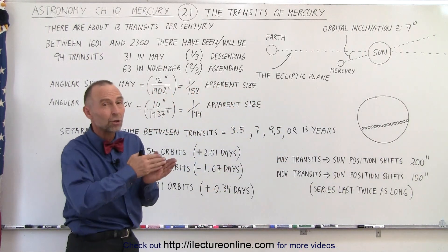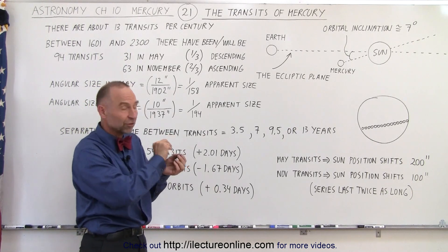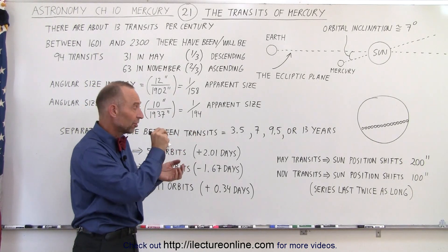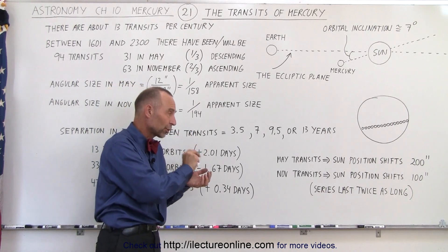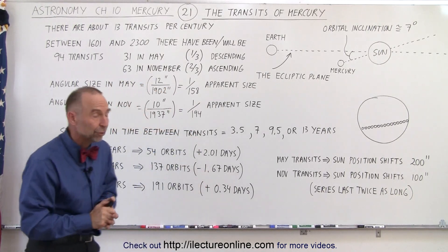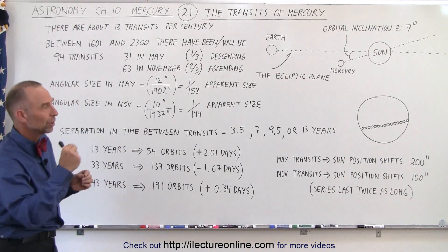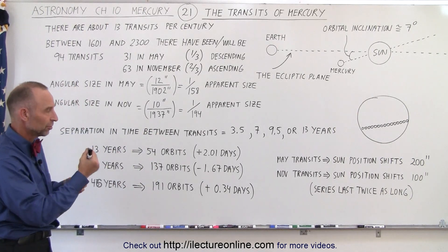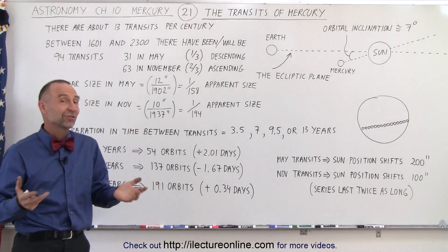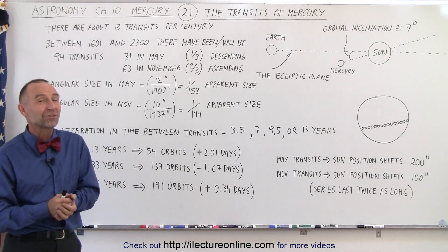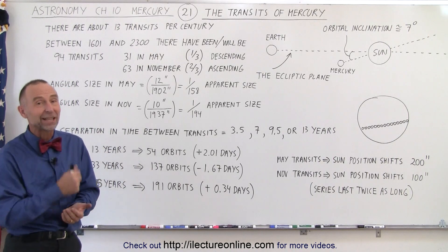These series can go on for hundreds and hundreds of years, with Mercury transiting the disk of the sun in May or in November. It's all because of the almost perfect alignment between the orbits of Earth and Mercury. This makes transits very predictable and interesting to track — and that's how it's done.